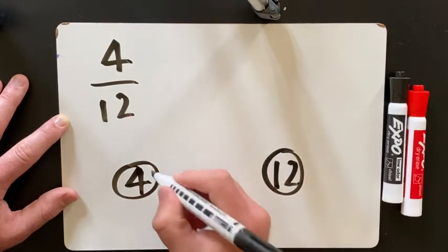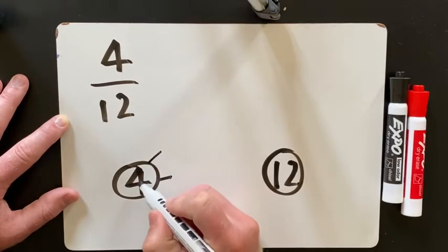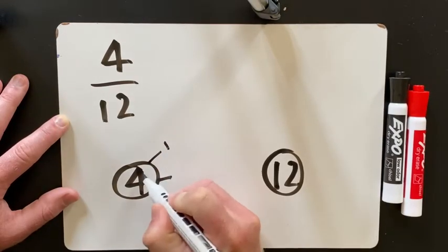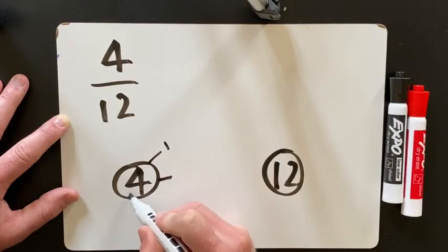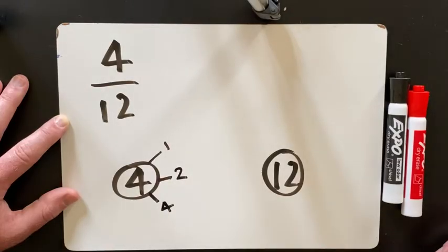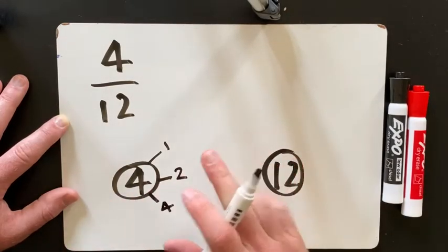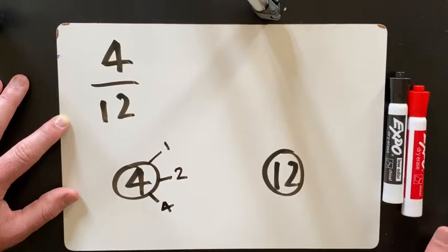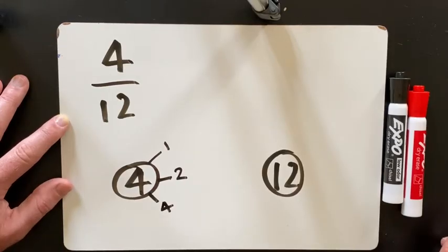Then what you do is you find all the factors. So 4 is in the 1 times table, 4 is in the 2 times table, 4 is in the 4 times table. Now I finish there because the number 4 is not in any other times tables.